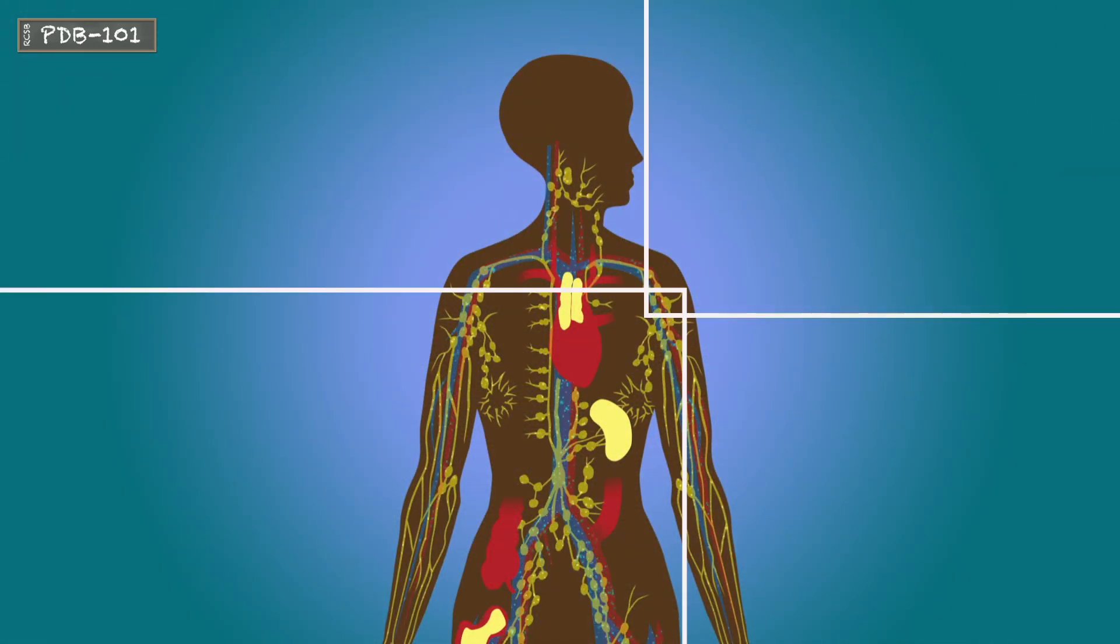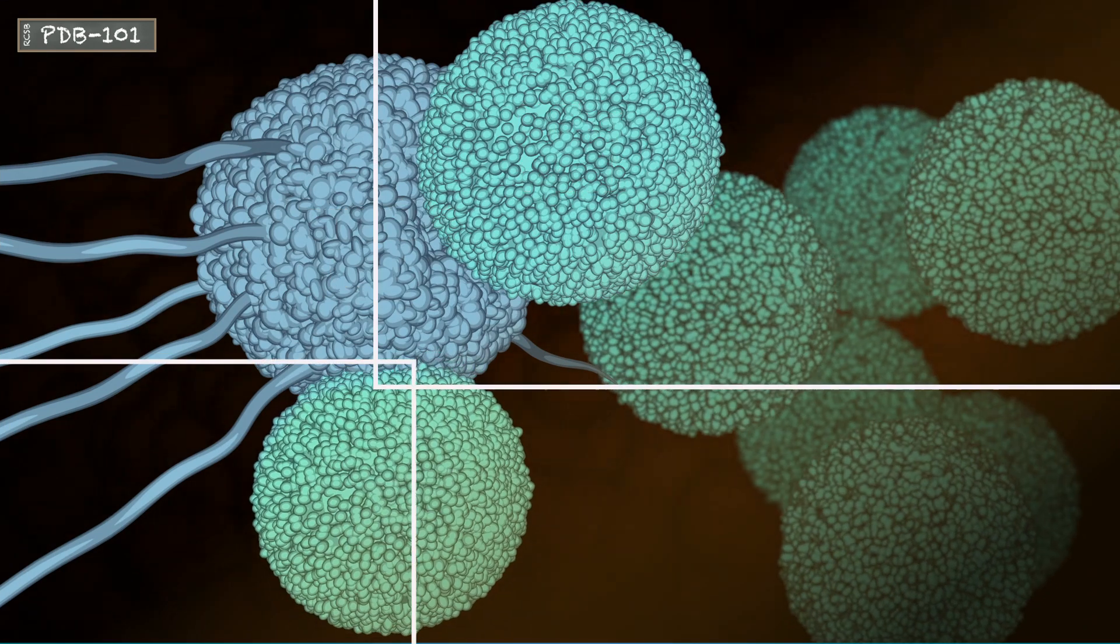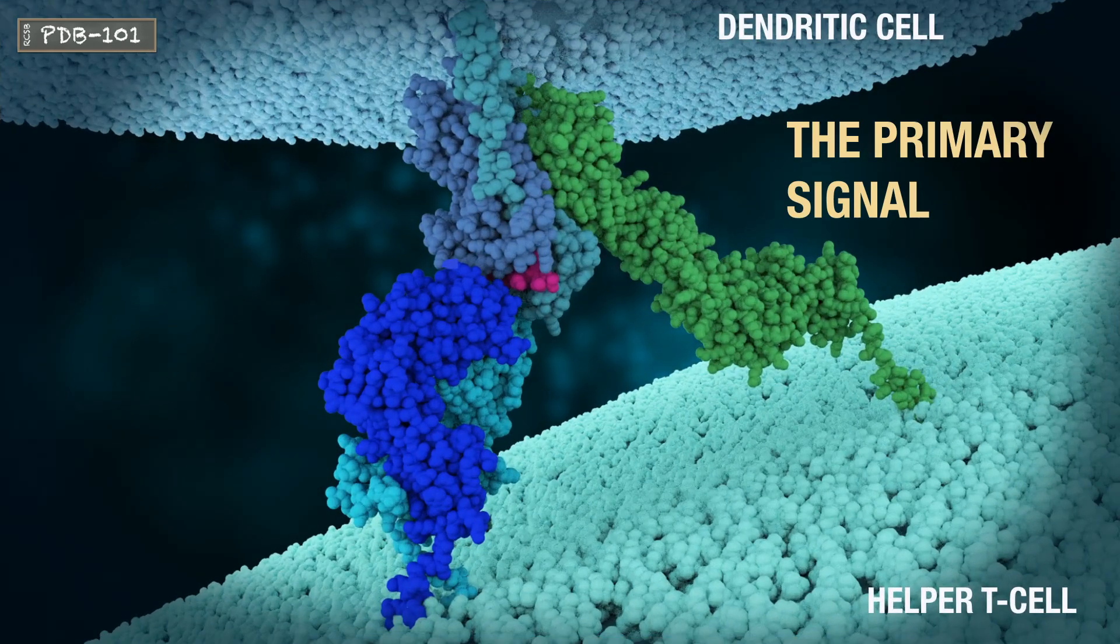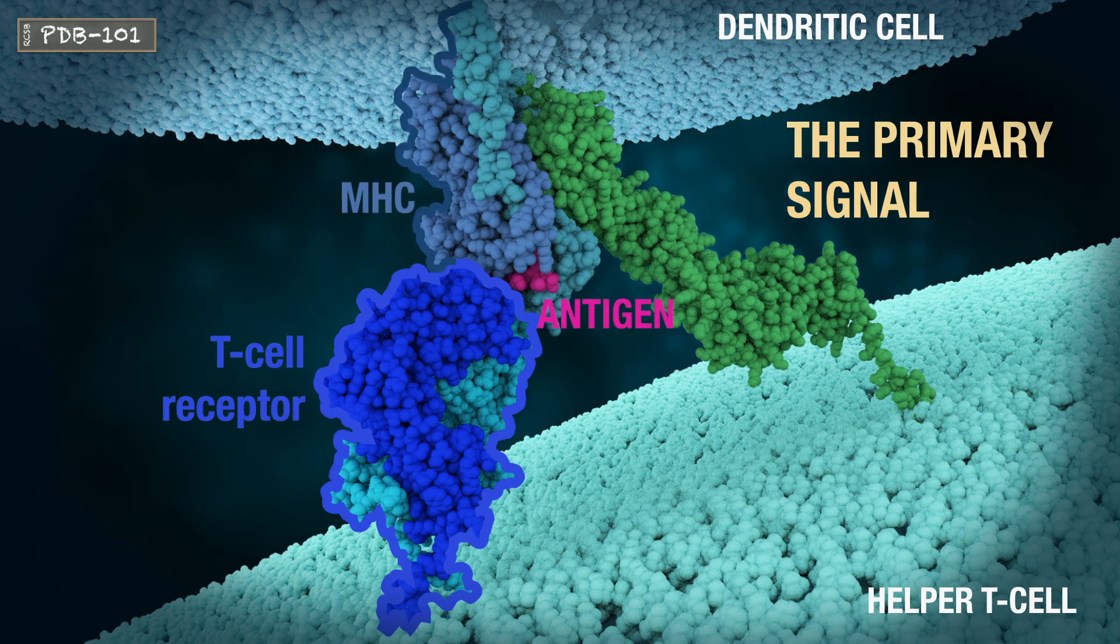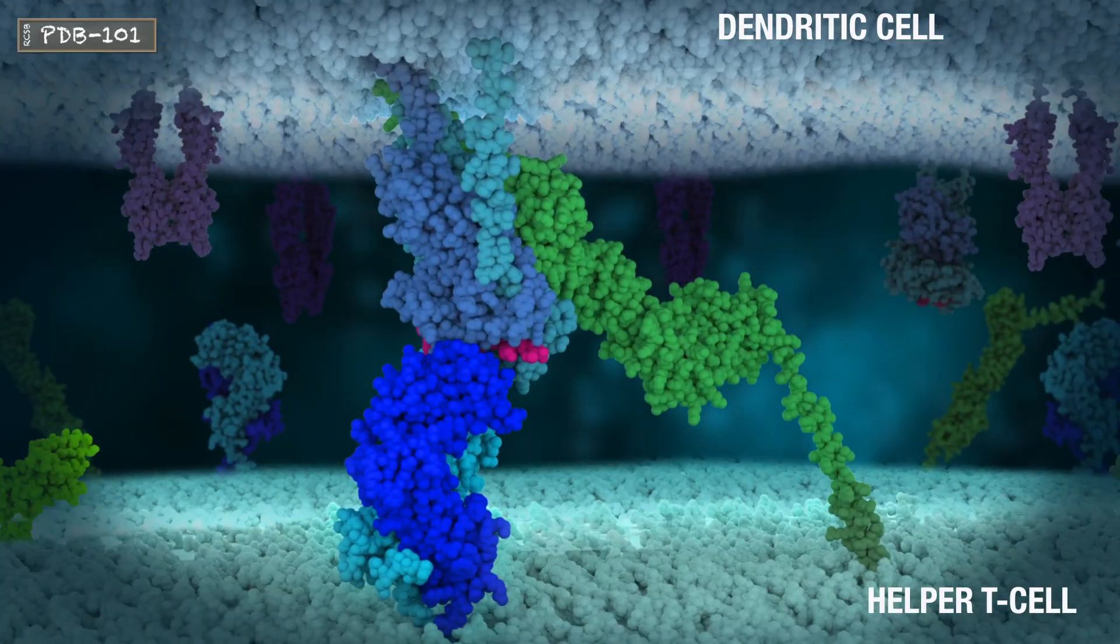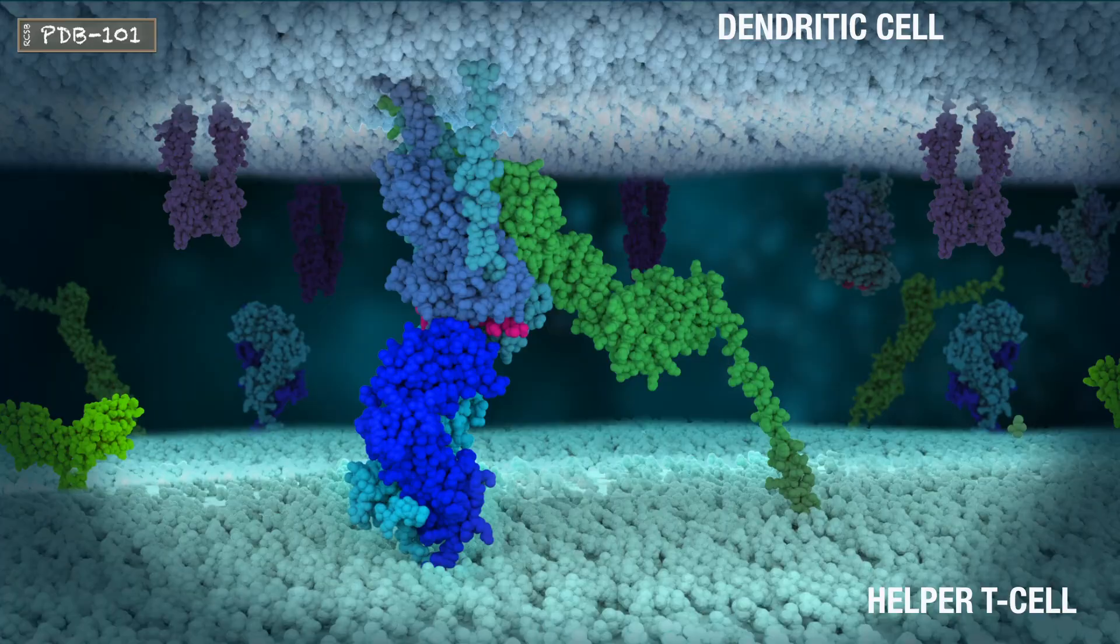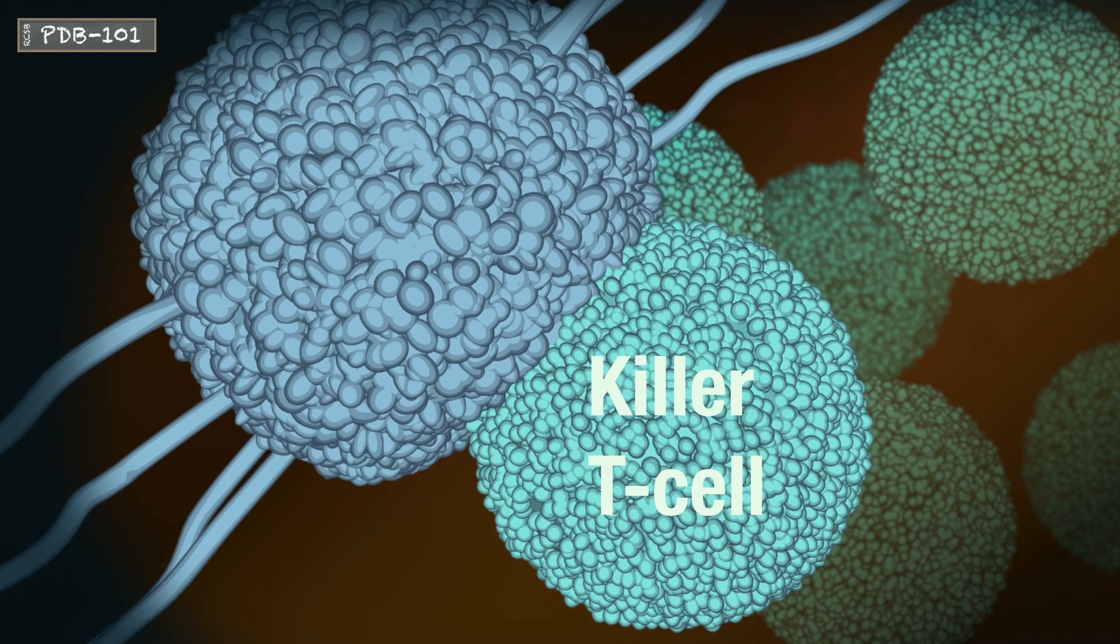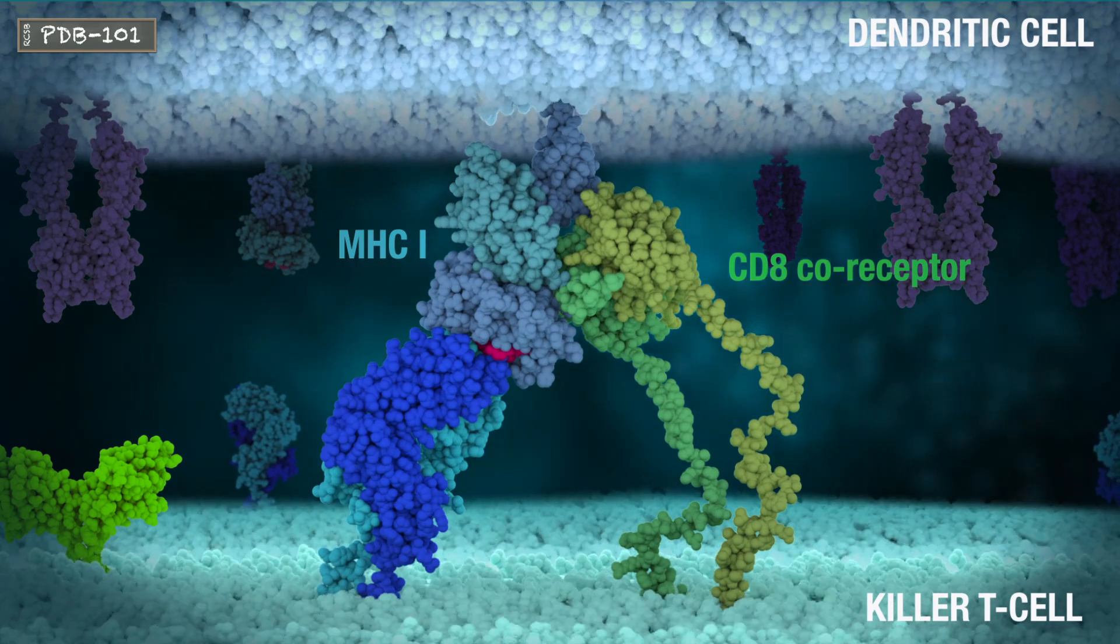At the interface between a dendritic cell and a T cell, two types of signals are transmitted that lead to T cell activation. The primary signal hinges on the T cell receptor's interactions with the antigen MHC complex on the dendritic cell. T cells carrying the CD4 coreceptor bind to MHC2 on dendritic cells. In contrast, T cells carrying CD8 bind to MHC1 on dendritic cells.